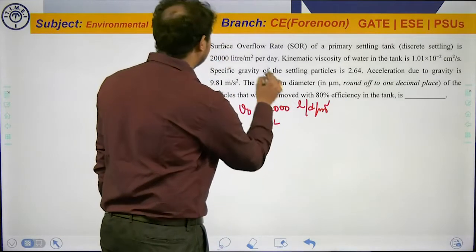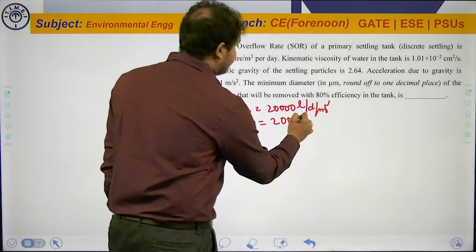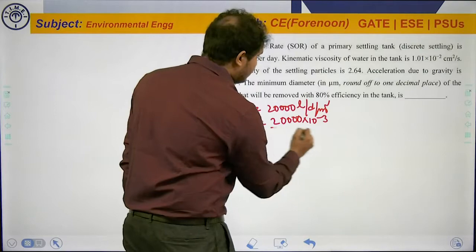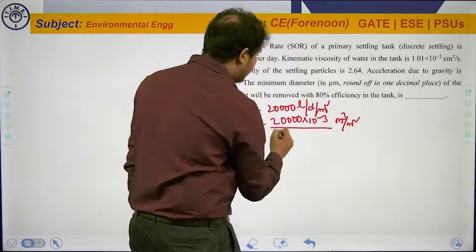We can convert this to... sorry, it is 20000 liters per day per meter square. We can convert it to meters per second: 20000 × 10⁻³ meter cube per meter square per day.